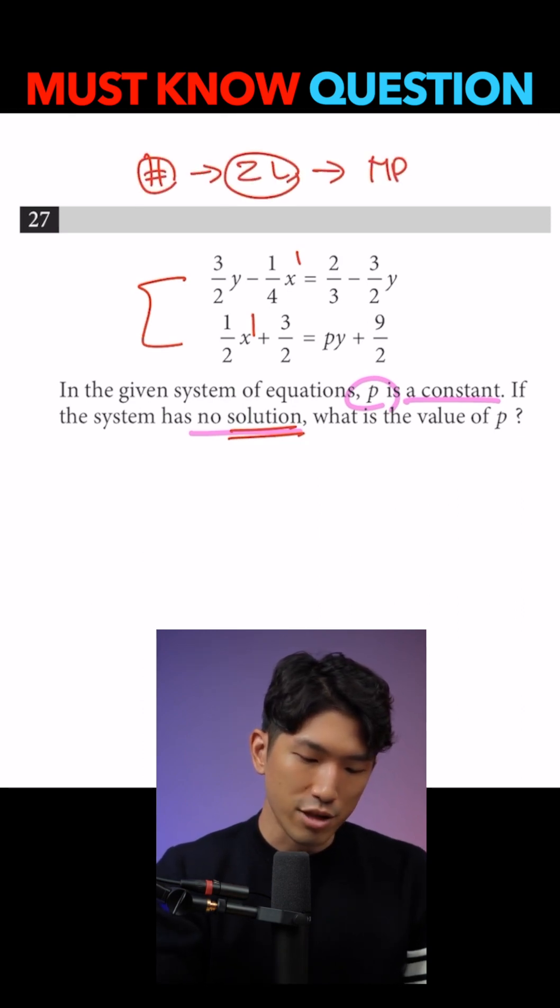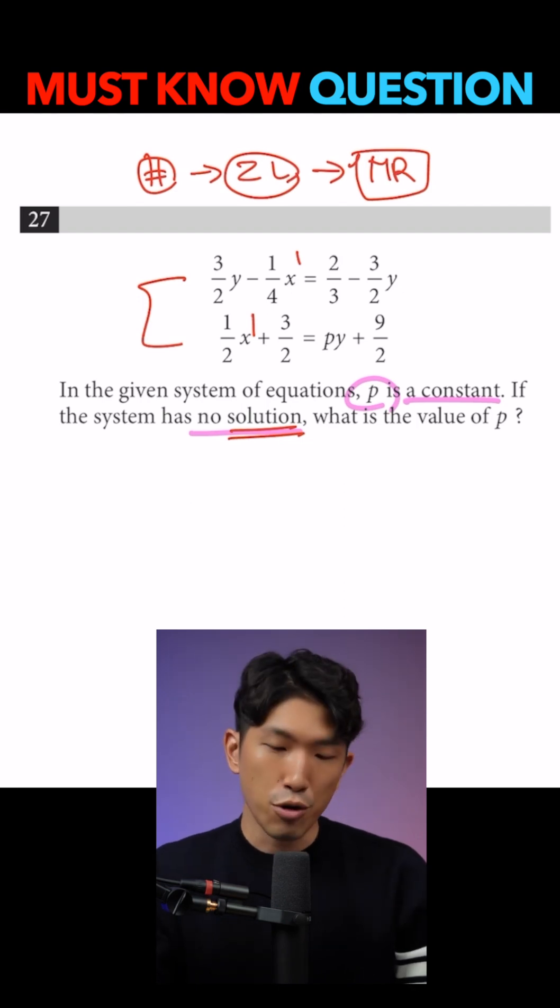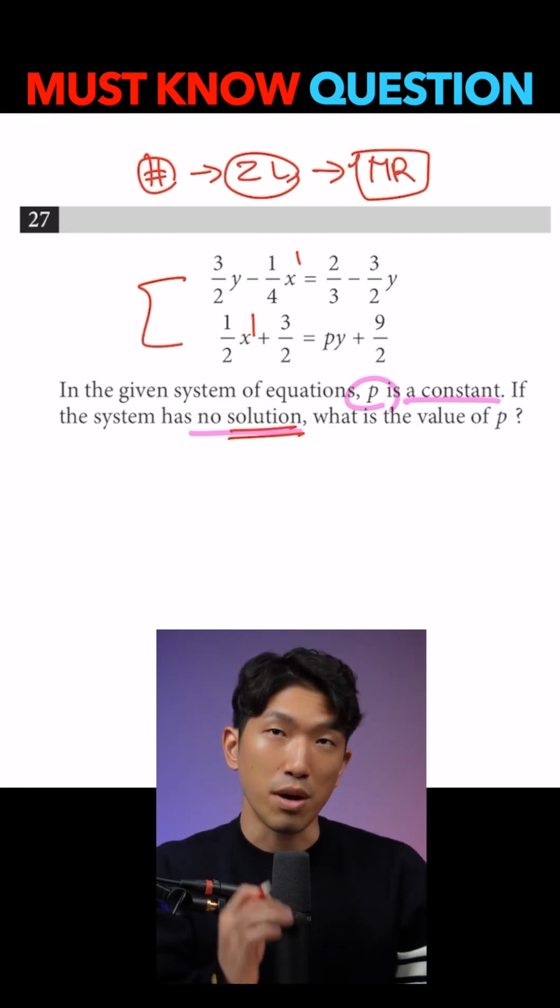Well, we use something known as the matching rule. I'm going to link in the pinned comment as well. And how you do it is you align the X, Y, and the numbers and you compare their ratios.